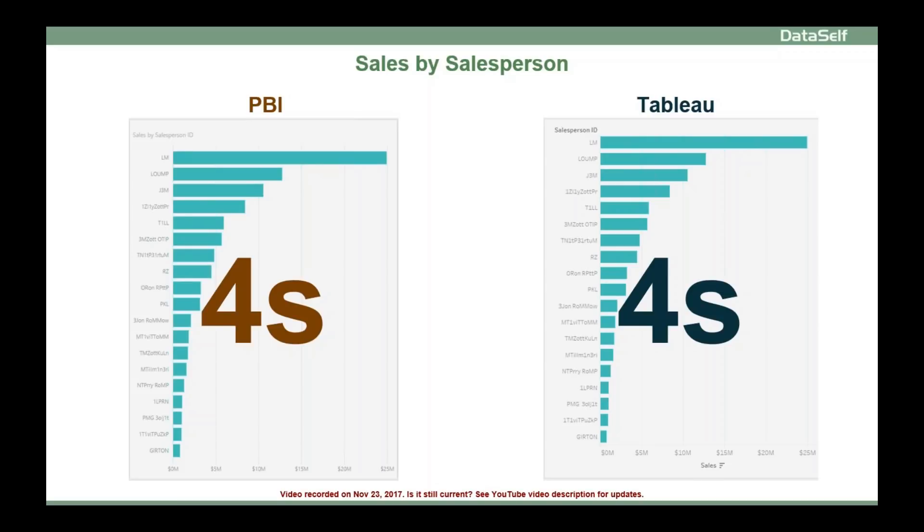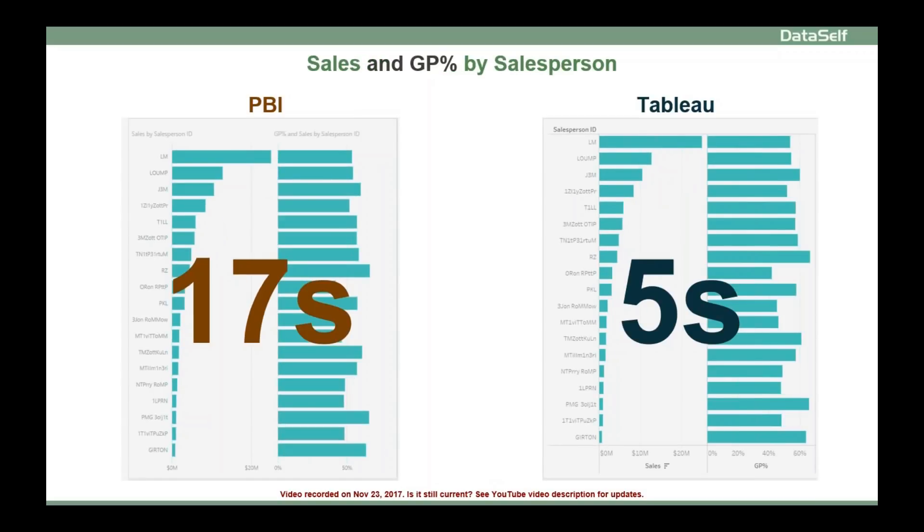Now, depending on the things that you need, and this example shows where we needed to do sales and gross profit percentage by salesperson in the same chart, for Tableau, it was only five seconds. It was only an extra click and the answer was right there. With Power BI, I had to go through a lot more clicks and know where to go to answer the same question. So we took pretty much three times as long to answer the question. Still, we're talking about seconds, so super fast, but a lot slower comparing to Tableau.